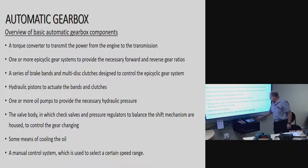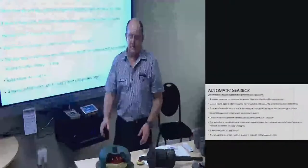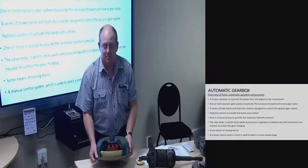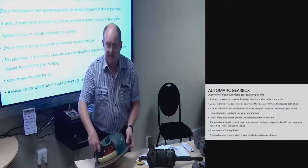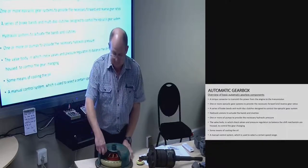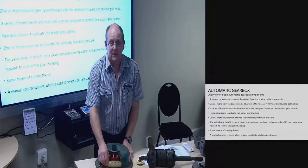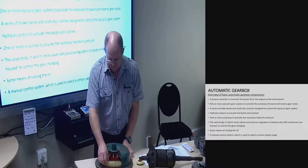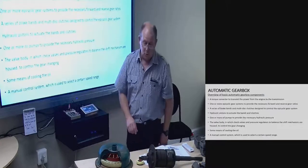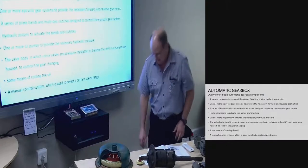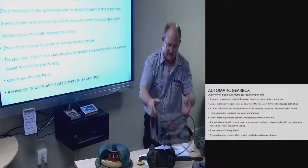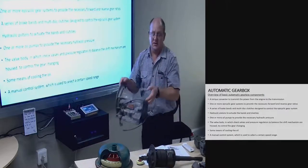There is also a manual control system used to select a certain speed range. Now, pointing out some of the items on the actual unit: this is our torque converter. It has three components. The blue section is the impeller, the yellow section is the turbine, and the red section is the stator. I'll explain just now how it works.